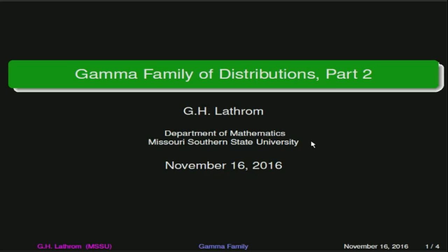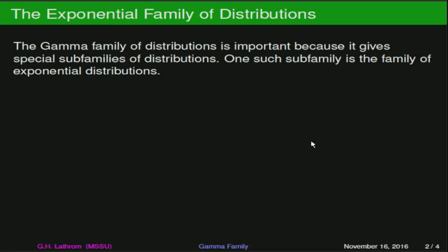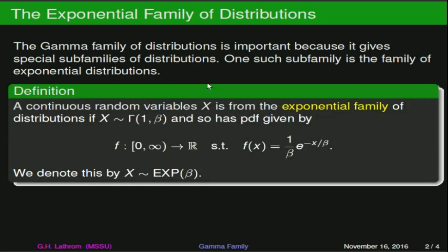One important subfamily of the gamma distributions is the exponential distributions. To see that it's a special case, suppose we have a continuous random variable x. We say it's of the exponential family if it is distributed as a Gamma(1, beta) distribution — so in the special case that alpha equals 1. This gives a PDF of the form 1 over beta times e to the negative x over beta, and we denote this as x tilde Exp(beta).